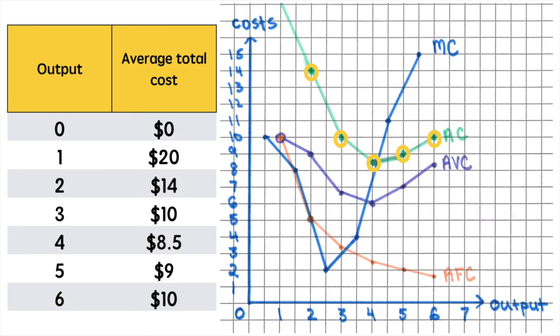Let's go back to our previous graph of the average total cost curve. This is the short run average cost curve of a particular firm.